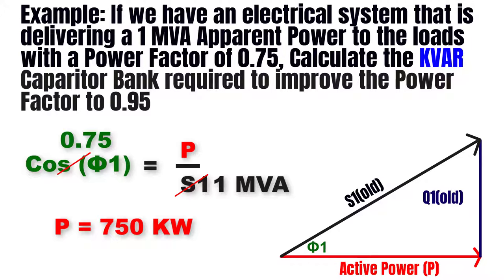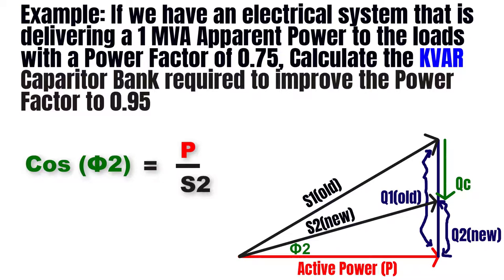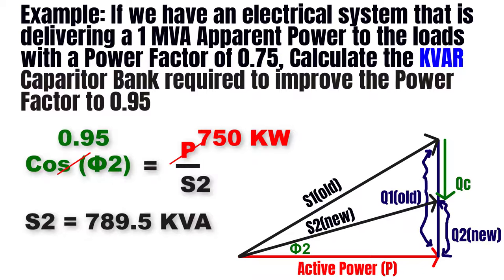We can observe that we have useful power of 750 kilowatts, but because the power factor is low, the total apparent power is much higher than the active power, which creates a burden on the system. After connecting a capacitor bank, the new power factor equals 0.95, so the new apparent power S2 equals 750 kW divided by 0.95, which equals 789.5 kVA — much closer to the active power value. We have now decreased the unuseful power and reduced the burden on the system.